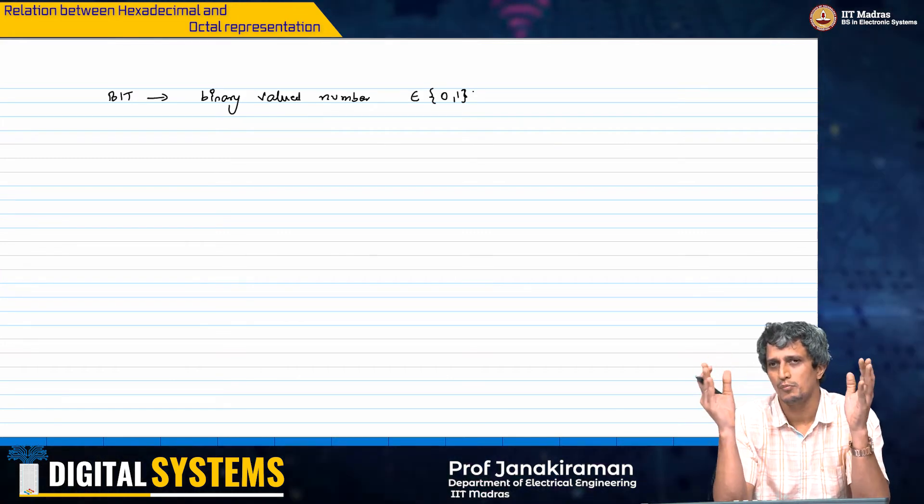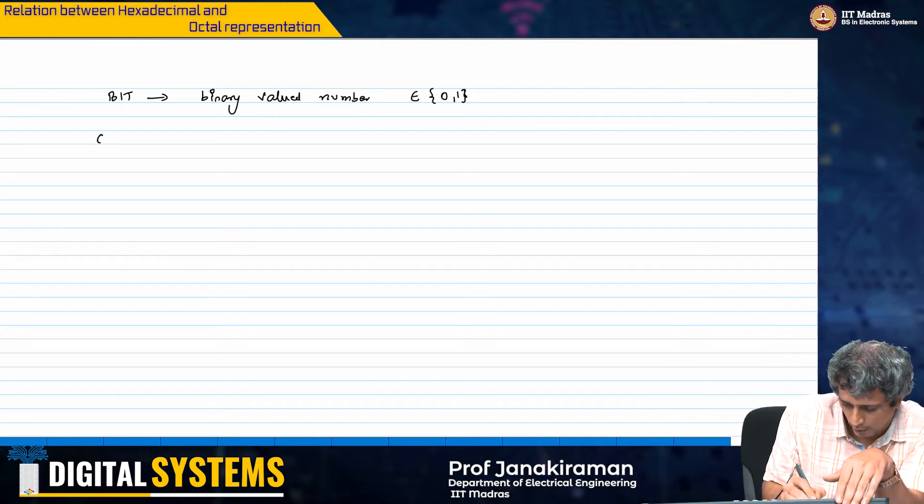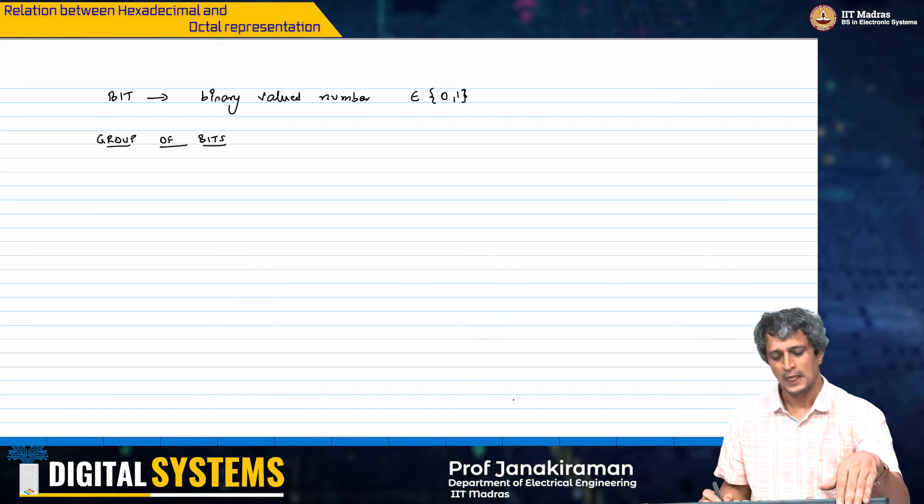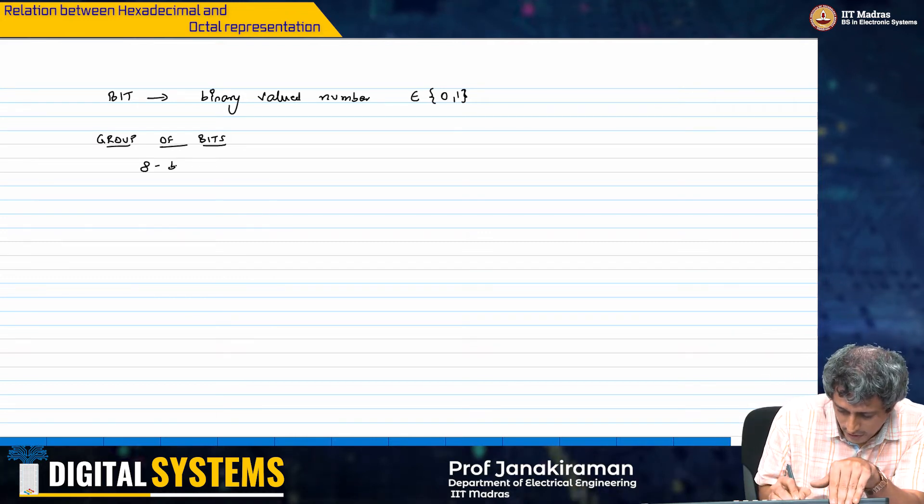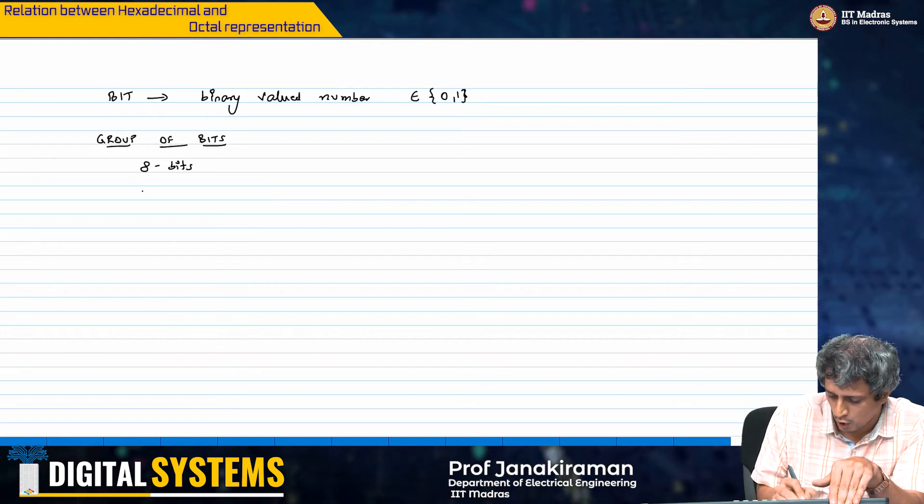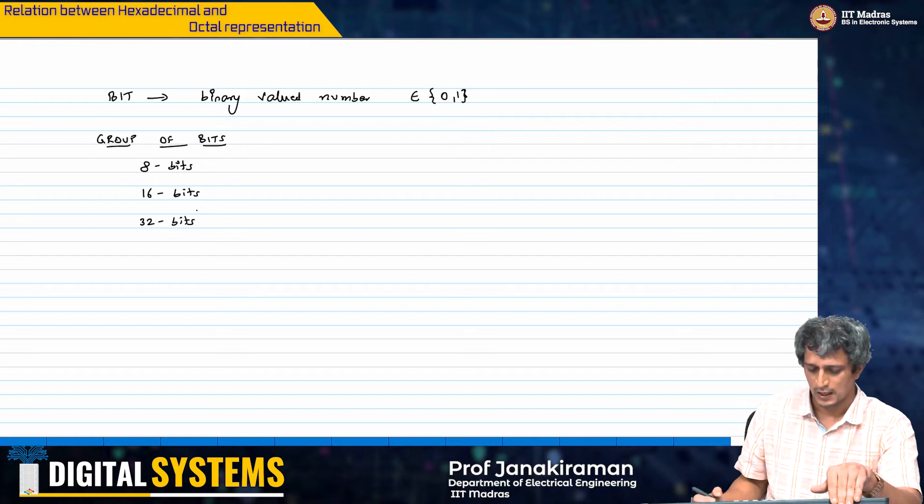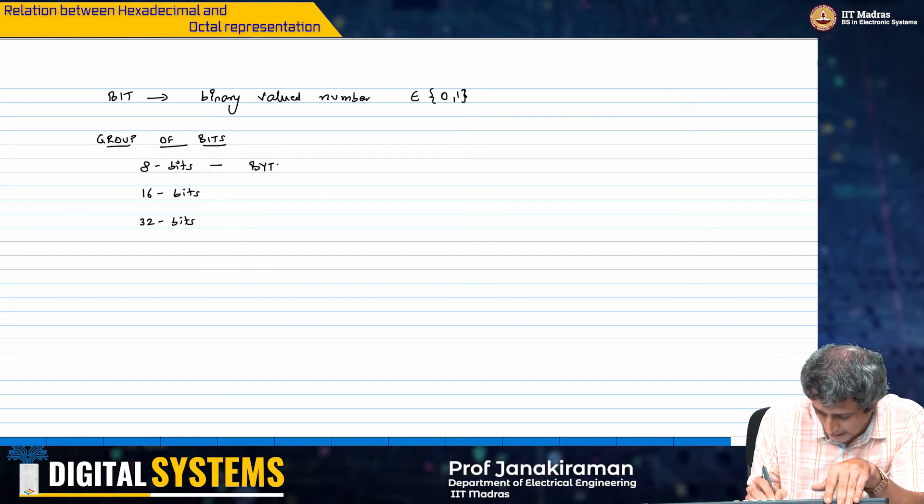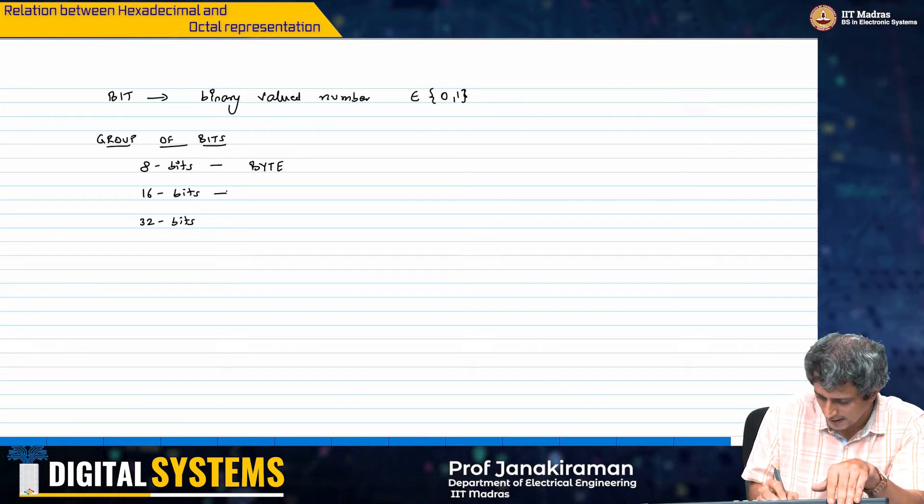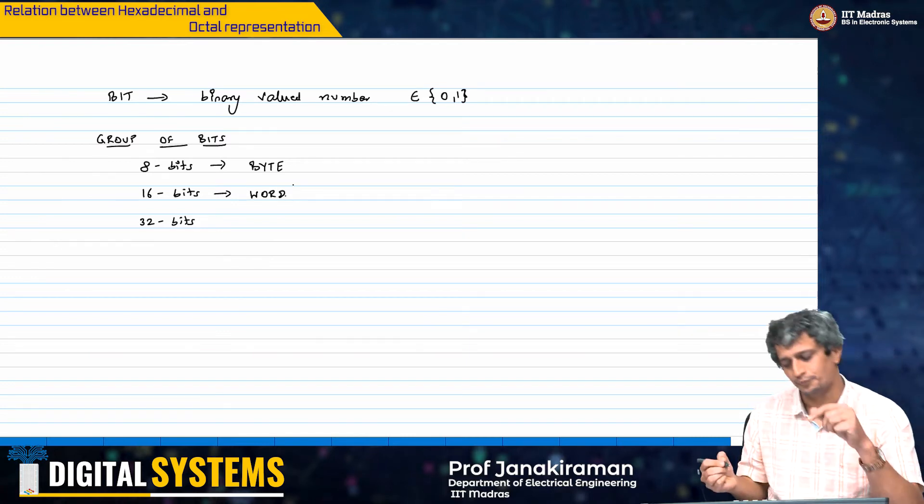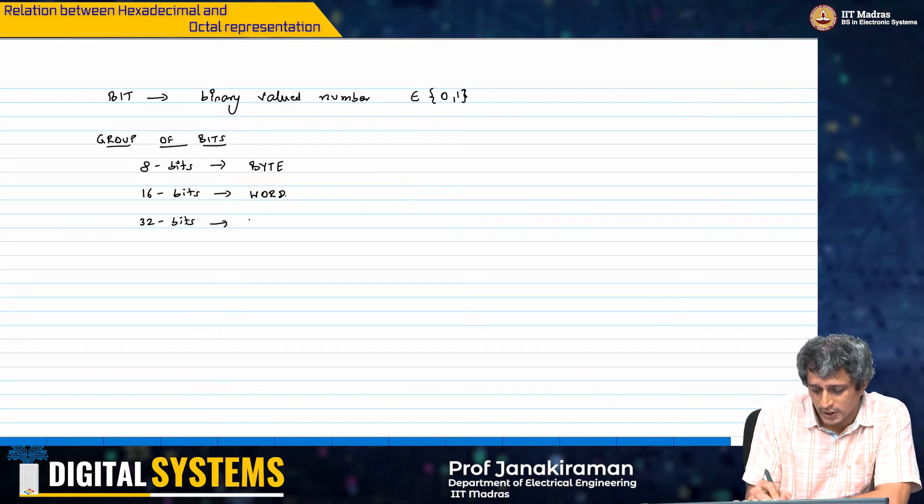Typically you do not deal with just one bit, you deal with a group of bits. And therefore you can deal with either 8 bits, or you could deal with 16 bits, 32 bits and so on. 8 bits is basically called a byte. 16 bits is called a word. 32 bits is called a double word.